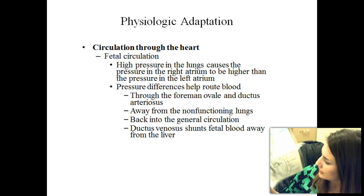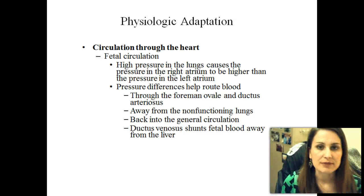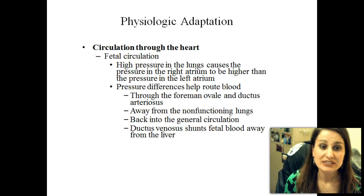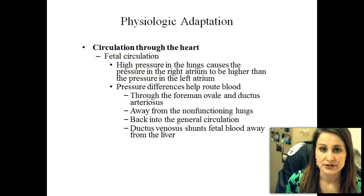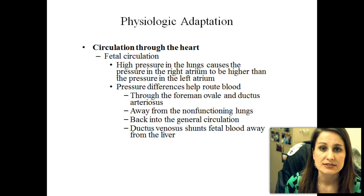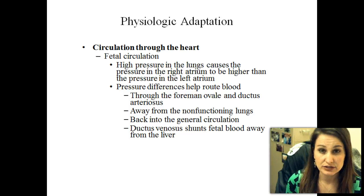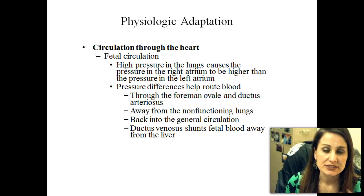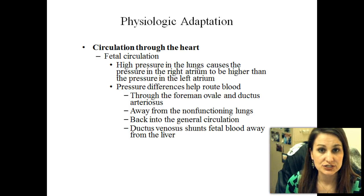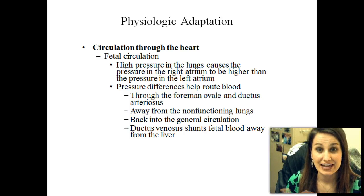There's one more shunt — that is going to be in the liver, and that is the ductus venosus. This baby is not having to do anything on its own at this point. It has the mother to filter out all the toxins. So the baby doesn't necessarily need to circulate blood through the liver. They do just enough to keep it vital and working, but they're not having to actually use it. Same with the lungs — there's a little bit of blood going to the lungs to keep that tissue alive, but not as much as you and I who have to use it to breathe.